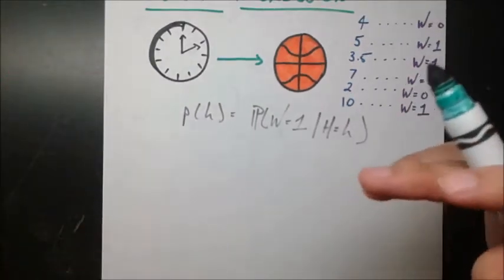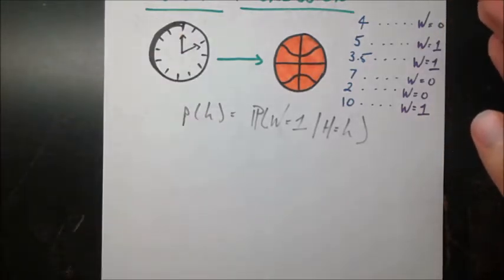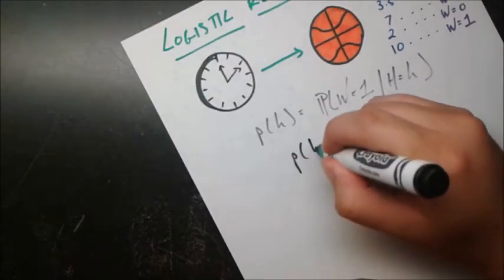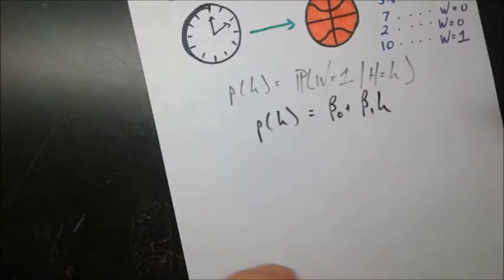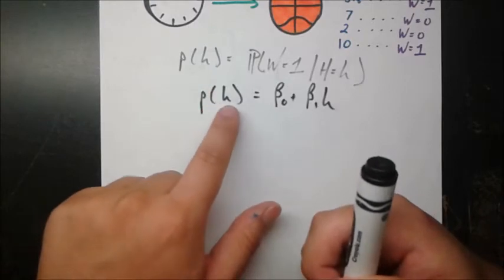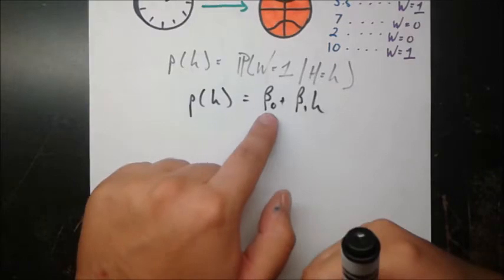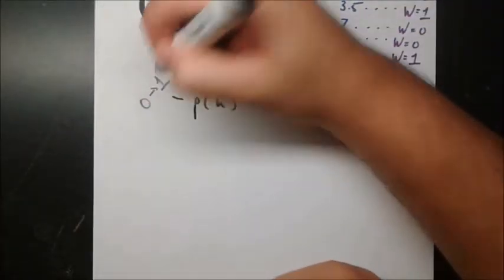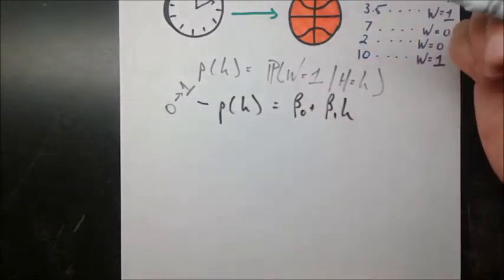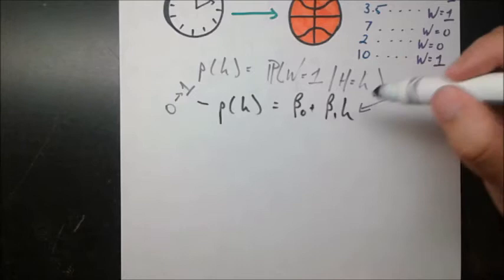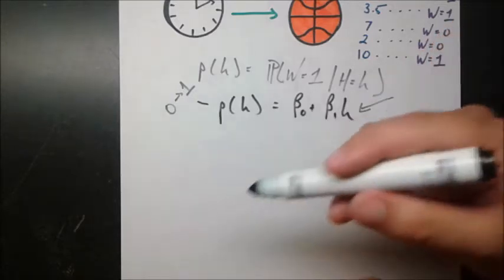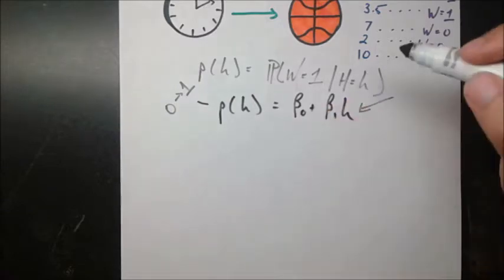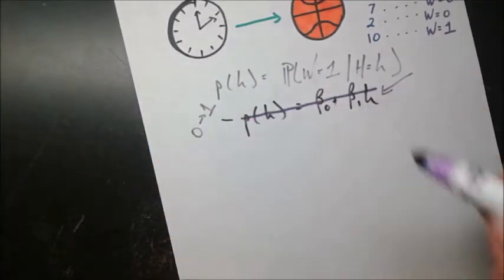We have a few options, and we'll go through them iteratively to rule out things and decide on a final result. Our first possibility is P of H equals beta naught plus beta 1 times H. That seems reasonable — we're trying to predict the probability of winning given h hours of practice using this linear function. But this is a bad idea because P of H can only take values between 0 and 1, and this linear model is unbounded — putting H to infinity gives predictions going to infinity, so we're going to rule this model out.